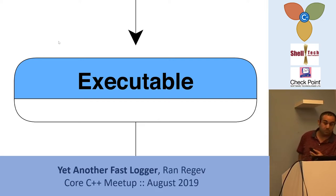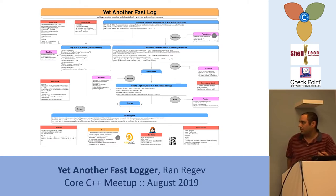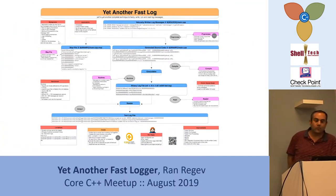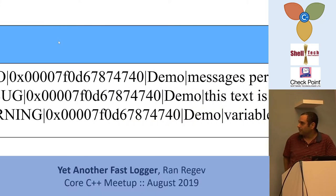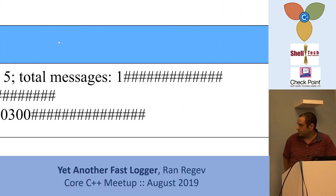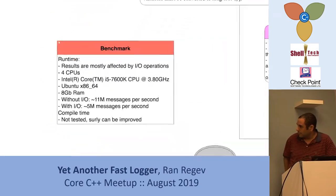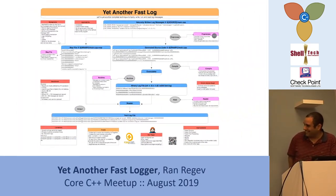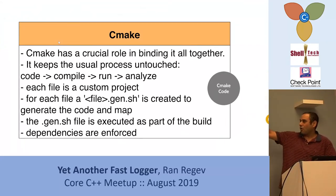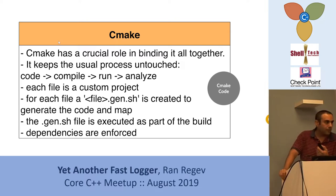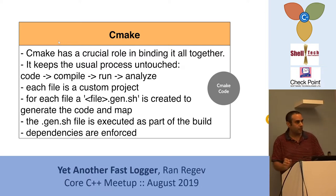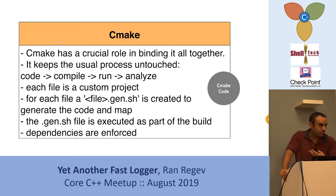Maybe I'm not familiar with it — maybe there's already a tool like this. The main advantage is that when I build everything with CMake, the regular process of code, compile, build, and analyze is kept for the user. You don't have to do anything special as a programmer — you get everything wrapped up with CMake, just build your code, run your executable, and get the logs using the reader.